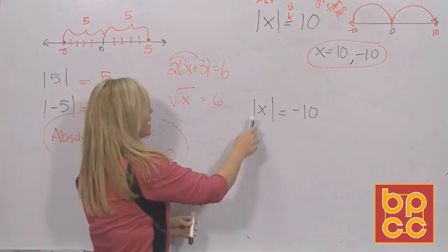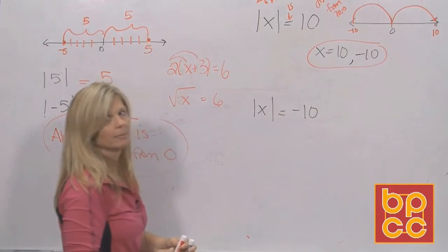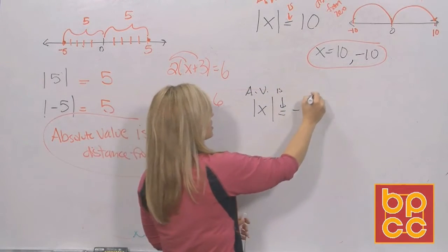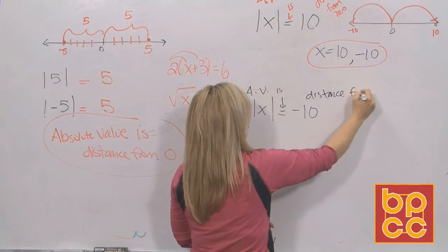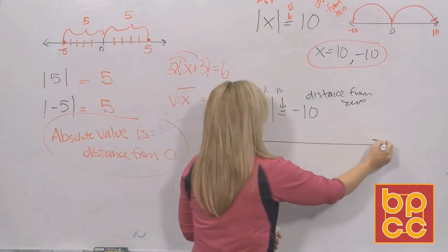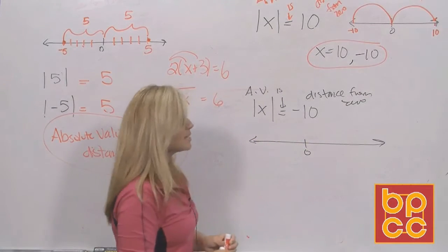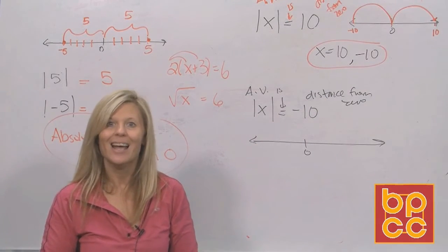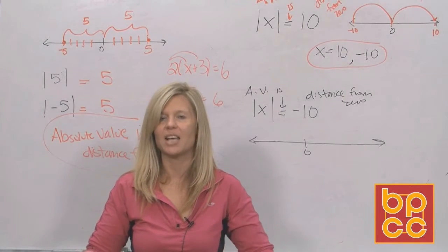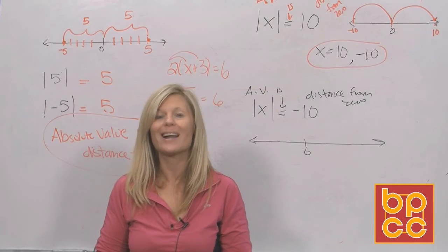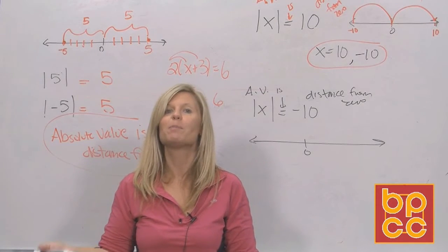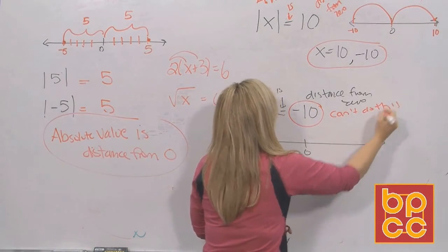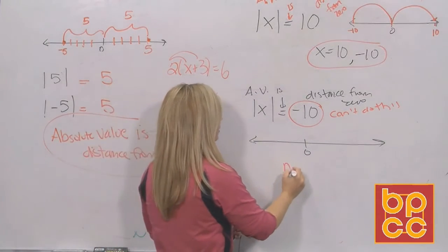Now look at this one: absolute value equals negative 10. Using the definition — absolute value is distance from zero — this negative 10 is supposed to be your distance from zero. Think about it as a picture: I'm at zero on the number line and I'm telling you to move me a distance of negative 10. Can you physically do that? Can you move a distance of negative 10? No. Distance has always got to be positive. So because the distance is negative, there is no solution.